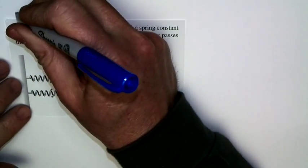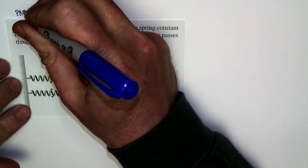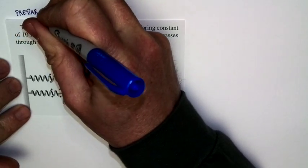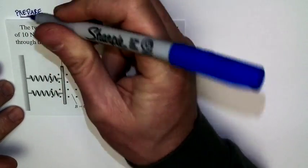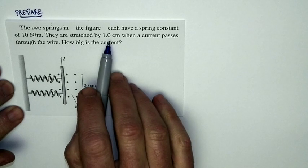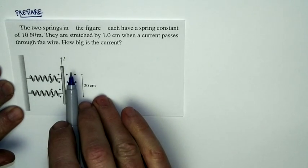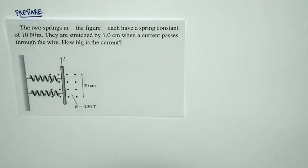Let's go ahead and prepare to solve this problem. Let's take a look at what it's asking. Two springs are stretched by one centimeter when a current passes through this wire. And the question asks, how big is the current?